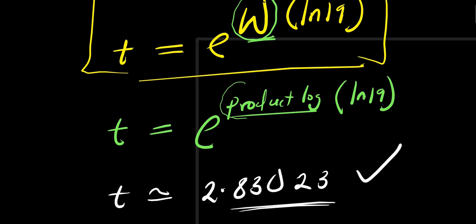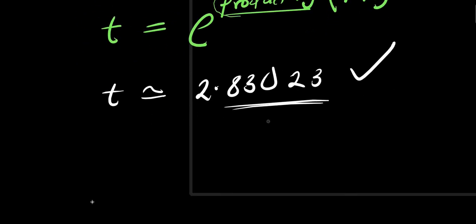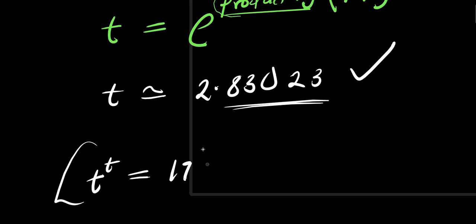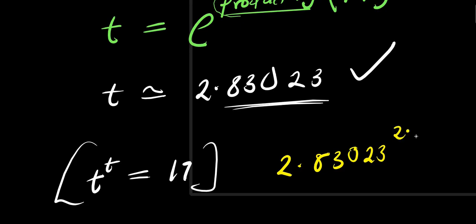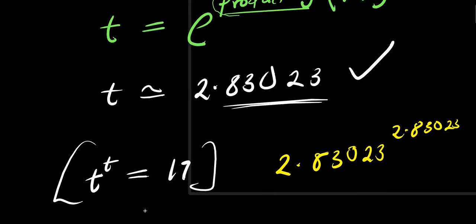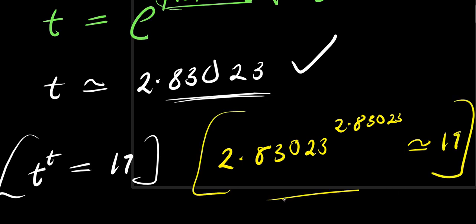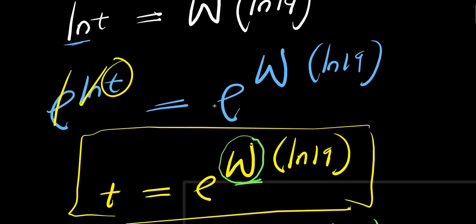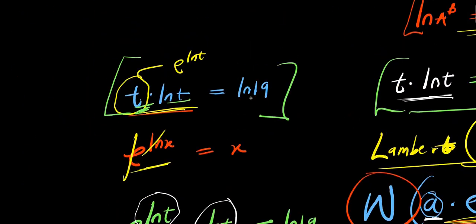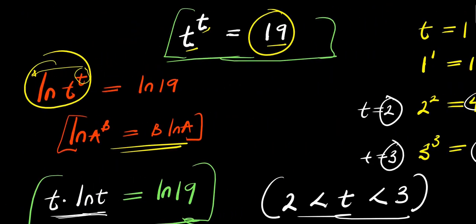So this becomes the value of t that satisfies the equation. If you have t to the power of t equals 19, it simply means 2.83023 raised to the power of 2.83023 equals approximately 19. Ladies and gentlemen, that is it — that is how you can solve it without wasting time. Thank you and see you again.